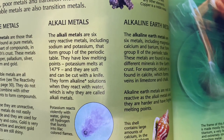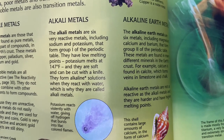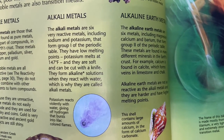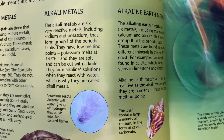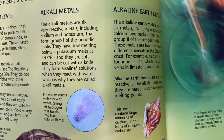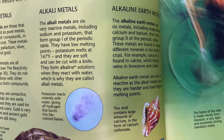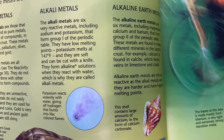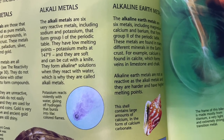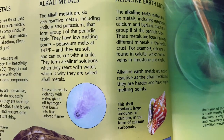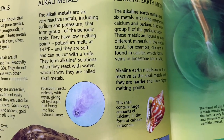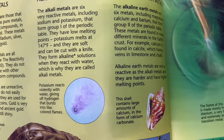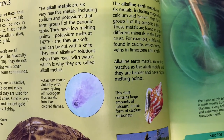The alkali metals are six very reactive metals, including sodium and potassium, that form Group 1 of the periodic table. They have low melting points — potassium melts at 147 degrees Fahrenheit — and they are soft and can be cut with a knife. They form alkaline solutions when they react with water, which is why they are called alkali metals.